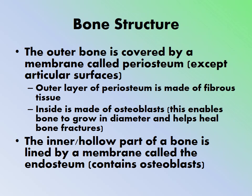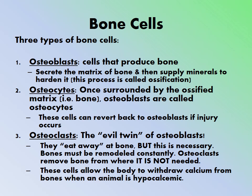The inner hollow part of a bone is lined by a membrane called the endosteum, which also contains osteoblasts to assist with bone formation. There are three types of bone cells. Osteoblasts are the cells that make bone — they produce and secrete the bone matrix, then supply minerals to harden it. That hardening process is called ossification.